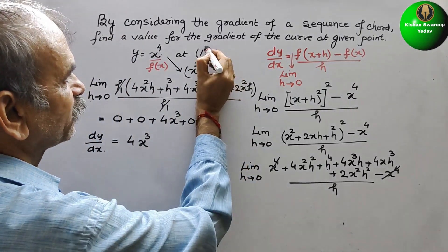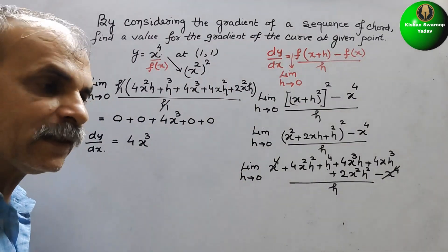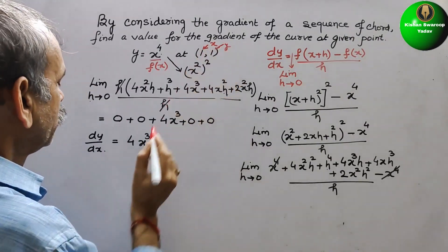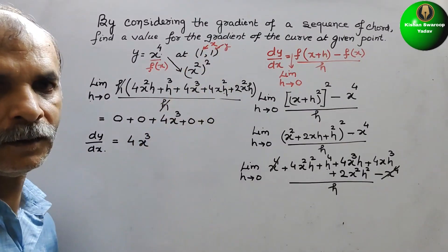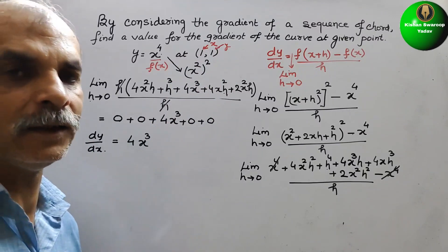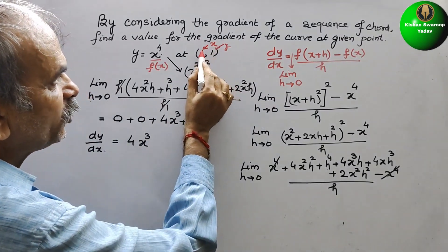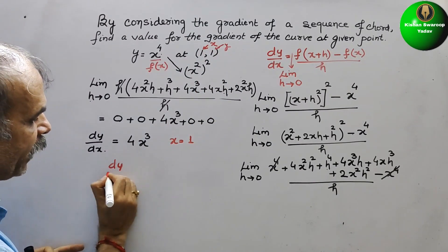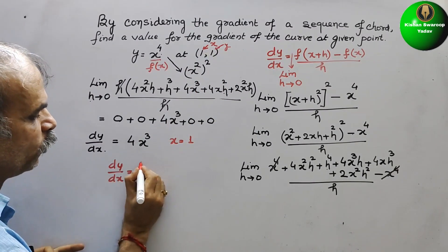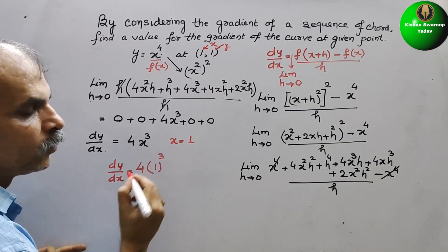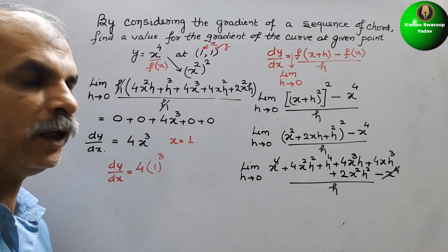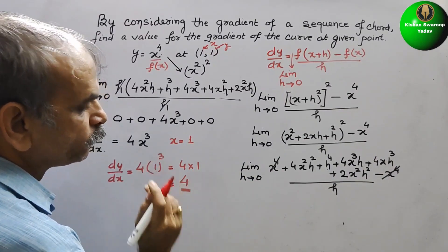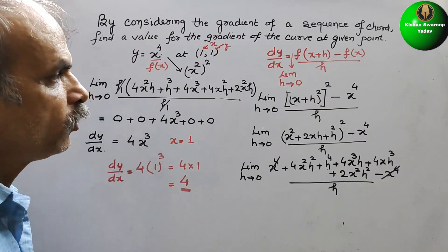The point given is (1, 1) — the first value is for x and the second is for y. We got dy/dx, so now we substitute x equal to 1. We get dy/dx equal to 4 into 1 cubed. 1 to the power of any number is 1, so 4 into 1 equals 4. Therefore, your gradient is 4.